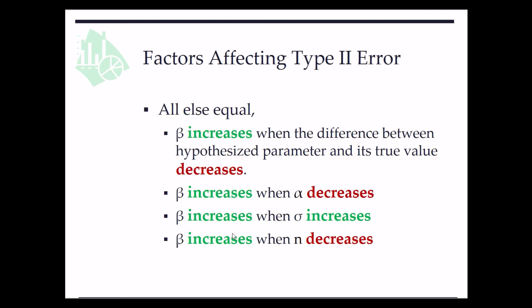Regarding type 2 errors, there can be different factors affecting the error. Assuming all else equal, beta increases when the difference between hypothesized parameter and its true value decreases. Second, beta increases when alpha decreases.